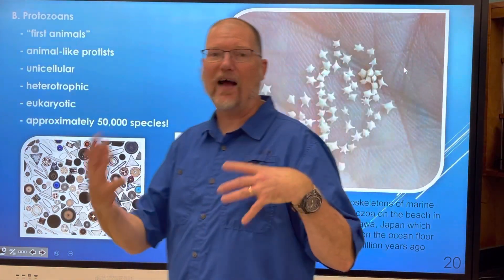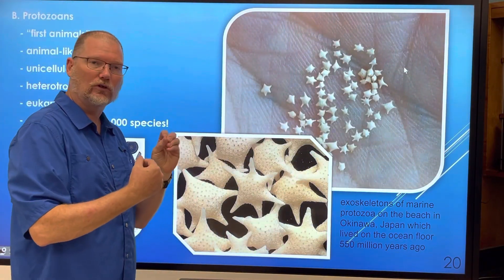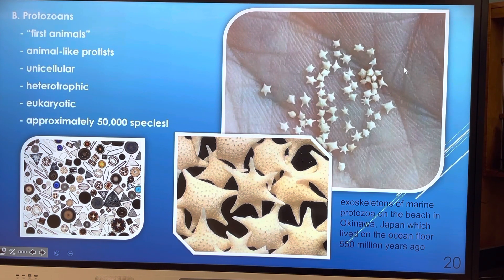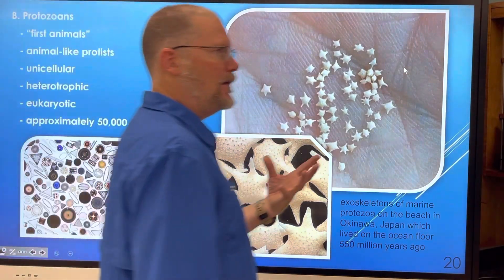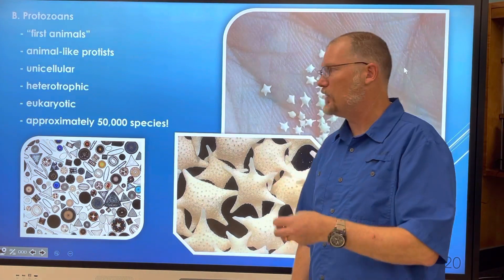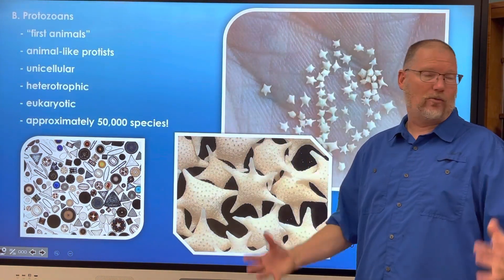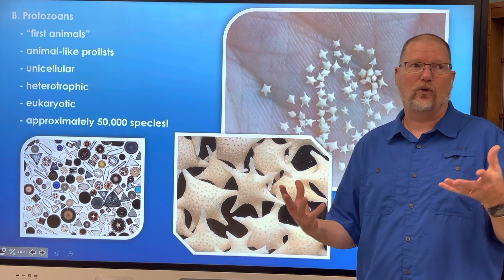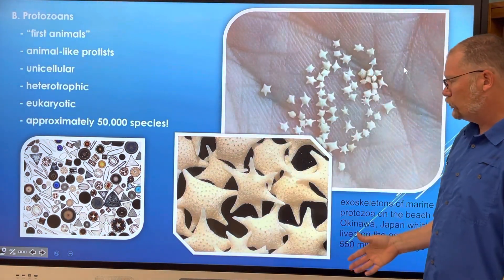Now we're moving on from phytoplankton to the protozoans — these are your zooplankton, your animal-like unicellular plankton. They are heterotrophic, meaning they get their food from something else. They're eukaryotic, so they have a nucleus as opposed to bacteria which are prokaryotic. There are roughly 50,000 species, though we haven't discovered them all yet. When you zoom in, these are the exoskeletons of a marine protozoa found on the beach in Okinawa, Japan, that lived on the ocean floor 550 million years ago.